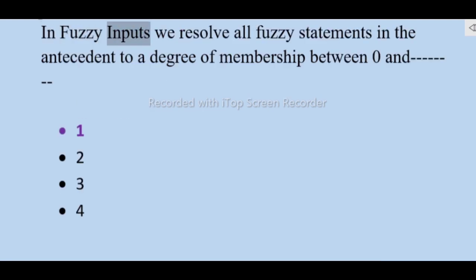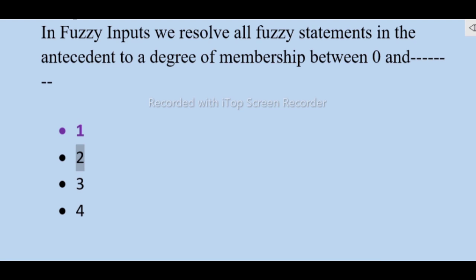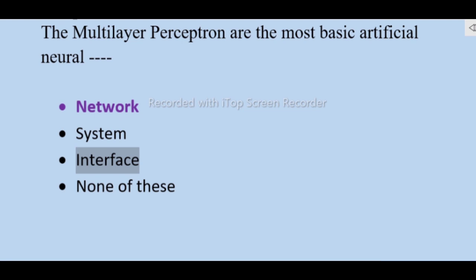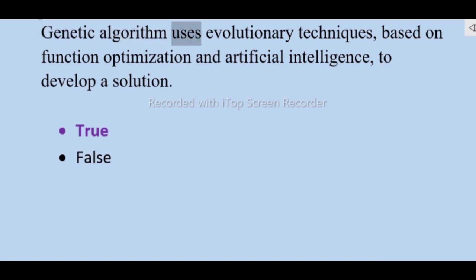In fuzzy inputs we resolve all fuzzy statements in the antecedent to a degree of membership between 0 and 1. The multilayer perceptron is the most basic artificial neural network system — none of these. Genetic algorithm uses evolutionary techniques based on function optimization and artificial intelligence to develop a solution — true.